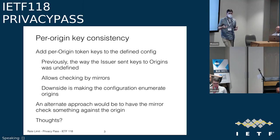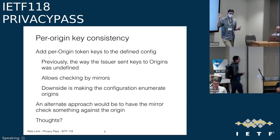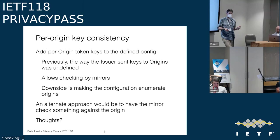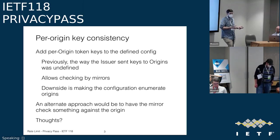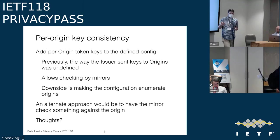We've added a definition so that mirrors can check it. The downside is that an issuer with many different origins is now putting the enumeration of all those origins in their configuration. This may be large, and it also publicly reveals the list of things you're supporting rate limiting on. This may be very good for transparency, but it may be something that deployments don't want. The authors would love to get feedback on whether this is viable.